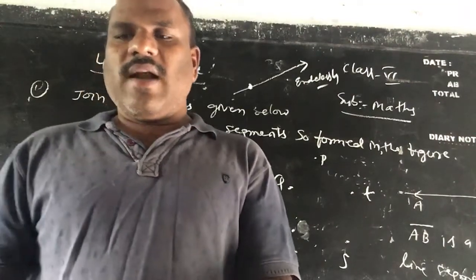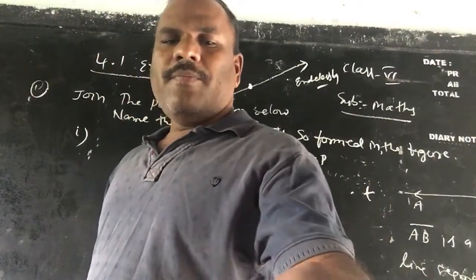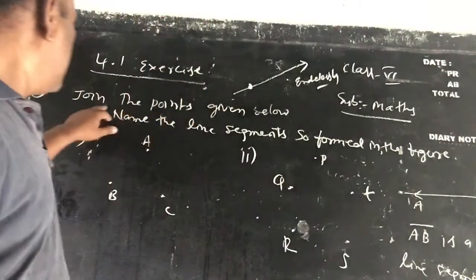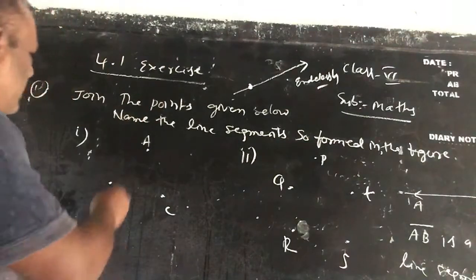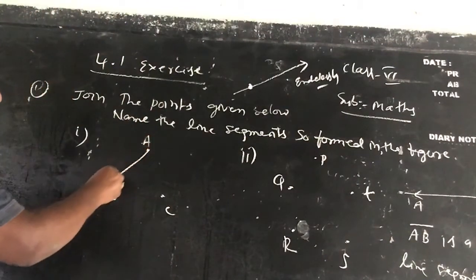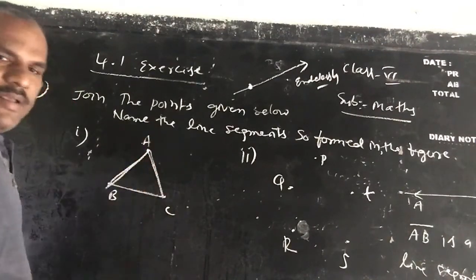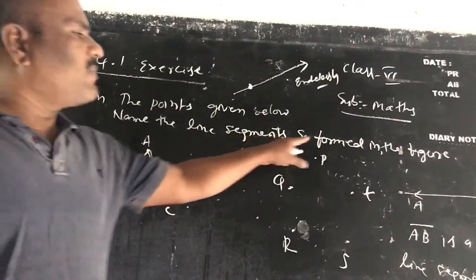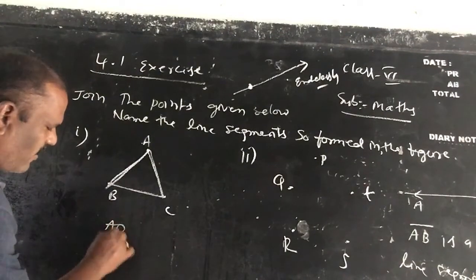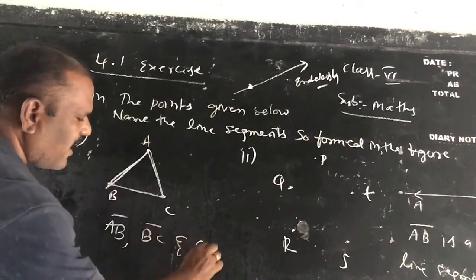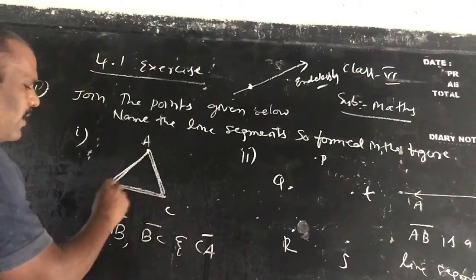Now let us discuss Exercise 4.1. Join the points given below and name the line segments formed in the figure. In the first figure with points A, B, C — join the figures by drawing lines. The line segments formed are AB, BC, and CA.